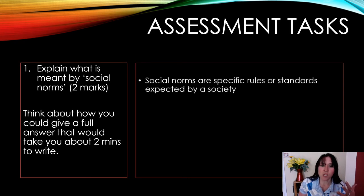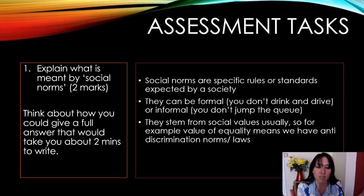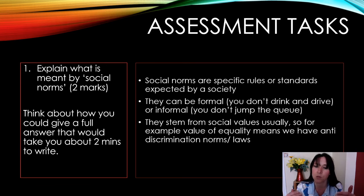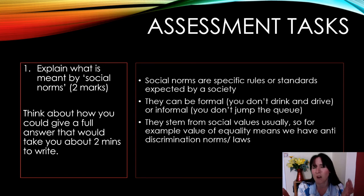When looking at an assessment task, you might get a question such as 'What is meant by social norms?' for two marks. My students wrote their answer in two minutes, and the answer is: social norms are specific rules and standards expected by society; they can be formal and informal; for example, the value of equality means we have anti-discrimination norms and laws. That would be a perfect answer — three points for two marks, and you could write that in two minutes quite easily.